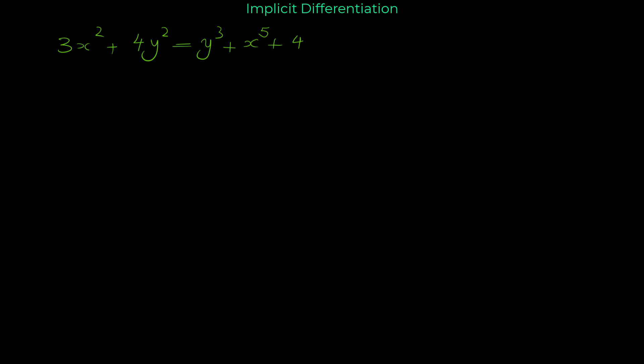Hello and welcome. In this video I'm going to show you how we can do implicit differentiation. We have this relation between x and y: 3x² + 4y² = y³ + x⁵ + 4. As you can see, x and y are related to each other by this relation. When x and y are mixed together in a relation, we have an implicit relation between x and y.